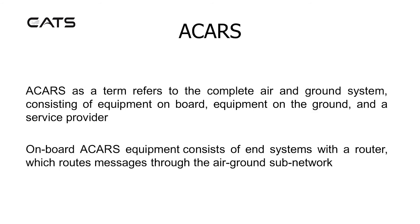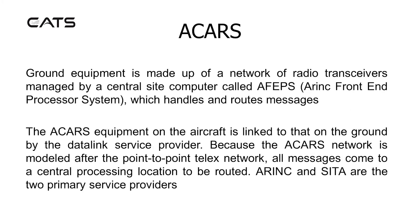ACARS as a term refers to the complete air and ground system, consisting of equipment on board, equipment on the ground, and a service provider. On-board ACARS equipment consists of end systems with a router which routes messages through the air-ground sub-network. Ground equipment is made up of a network of radio transceivers managed by a central site computer called AFEPS — ARINC Front End Processor System — which handles and routes messages. The ACARS equipment on the aircraft is linked to that on the ground by the data link service provider.